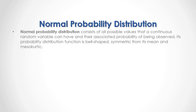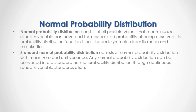An example of probability distribution is the normal probability distribution, which consists of all possible values that a continuous random variable can have and their associated probability of being observed. Its probability distribution function is bell-shaped, symmetric from its mean and mesokurtic. Standard normal probability distribution consists of normal probability distribution with mean zero and unit variance. Any normal probability distribution can be converted into standard normal probability distribution through continuous random variable standardization.